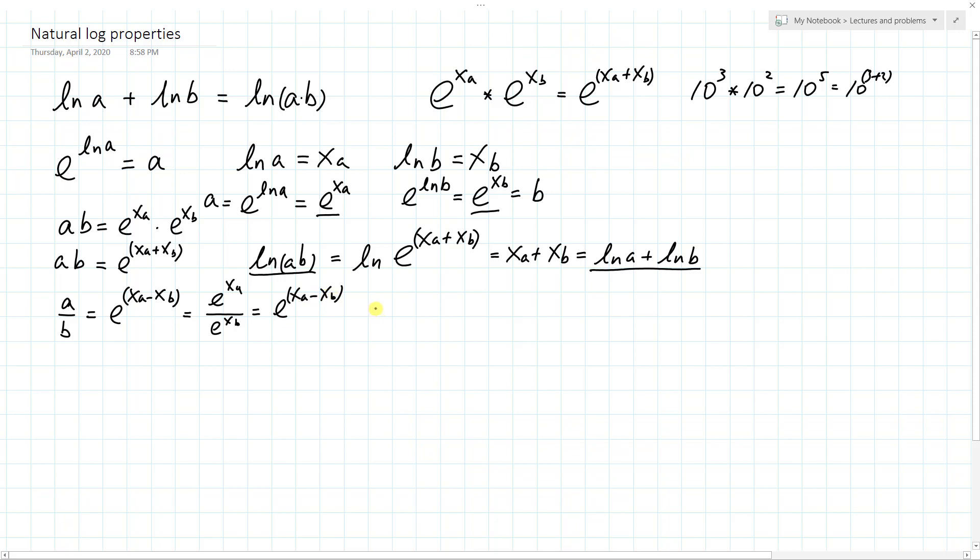So if we take the natural log of both the left hand side and the right hand side, we get natural log of a over b equals the natural log of e to the xA minus xB. And this gives us xA minus xB. And that, by definition, is natural log of a minus natural log of b.